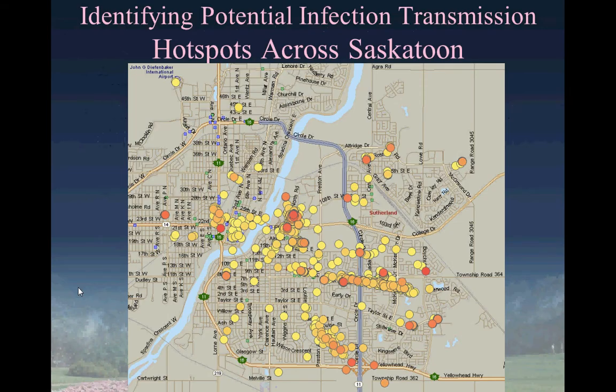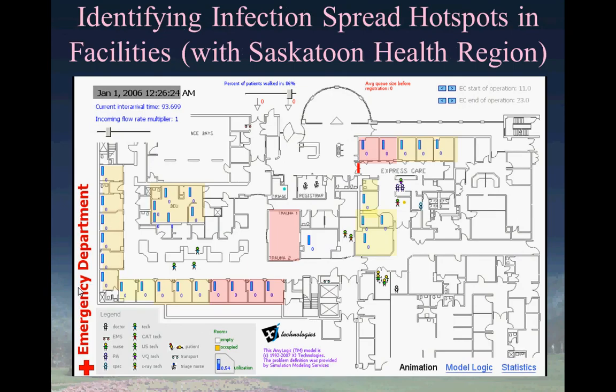These models help us link this cacophony of data to the impacts of our choices, thereby helping us make more informed decisions. For example, by joining data from smartphones with models of infection transmission, we can identify potential infection transmission hotspots across the city. Using a hypothetical situation, we could also identify infection spread hotspots within facilities — this is hypothetical because we don't yet have data on this project, but it is something we're pursuing with the Saskatoon Health Region within local long-term care facilities.